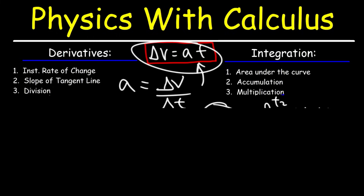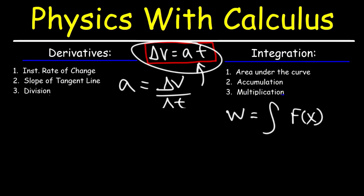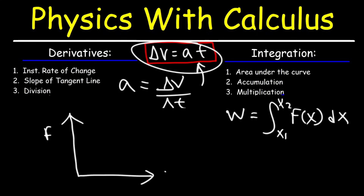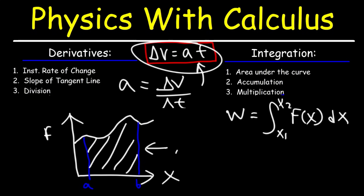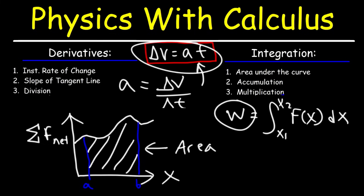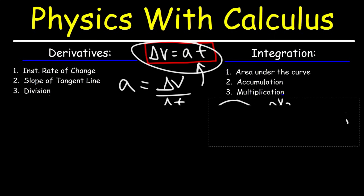Likewise, going back to the work function: work is the definite integral of force as a function of x. If we graph force on the y-axis and displacement on the x-axis with a variable force function, integrating from A to B gives us the area of the shaded region, which equals the work done by the net force — the sum of all forces acting on the object. The area under the curve is associated with integration, which is also associated with multiplication.